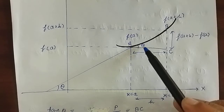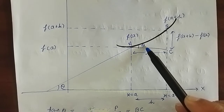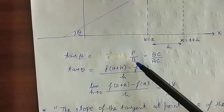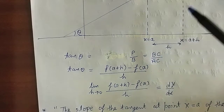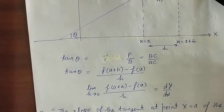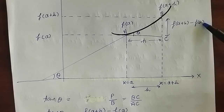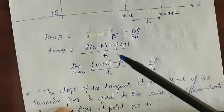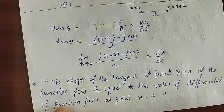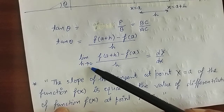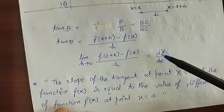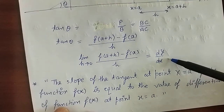इस right angle triangle में एक angle theta है। Tan theta का formula है perpendicular upon base, यानी BC upon AC। तो tan theta equal to f of a plus h minus f of a upon h। अगर इसमें limit लगाएं, तो limit h tends to 0, f of a plus h minus f of a upon h, इसी को हम differentiation dy by dx बोलते हैं।